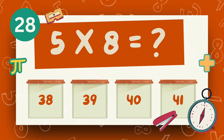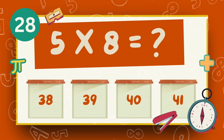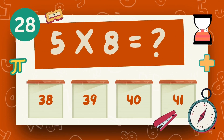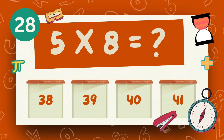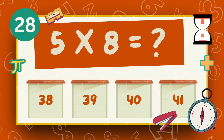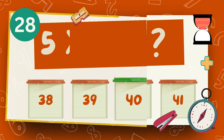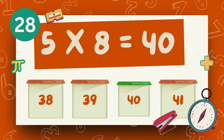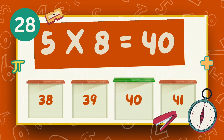What is 5 times 8? What is 6 times 8? The answer is 40.